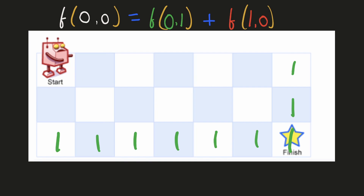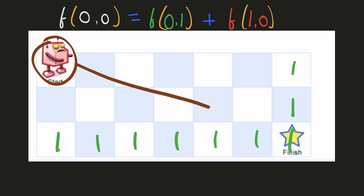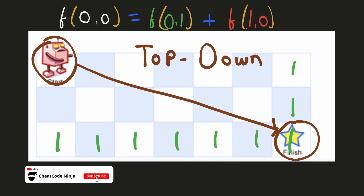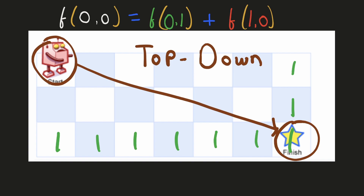In this approach, we are starting to solve the largest subproblem and gradually solving the smaller subproblems recursively. This recursion will finish when it reaches the base condition — that's why this approach is called the top-down approach. It is very similar in logic to the bottom-up approach.